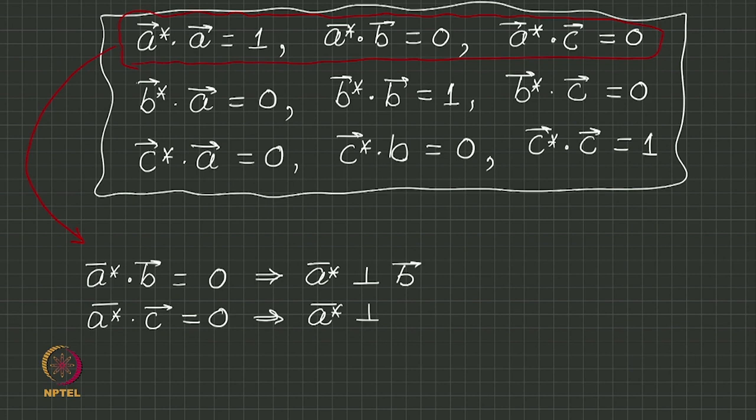If I look at the third relation, A star C is equal to 0, then it similarly tells me that A star is perpendicular to C. Now I am better off. Now I know that it is perpendicular to B as well as perpendicular to C. What does that mean? It is a line which is perpendicular to both B and C. A star is perpendicular to the plane of B and C.